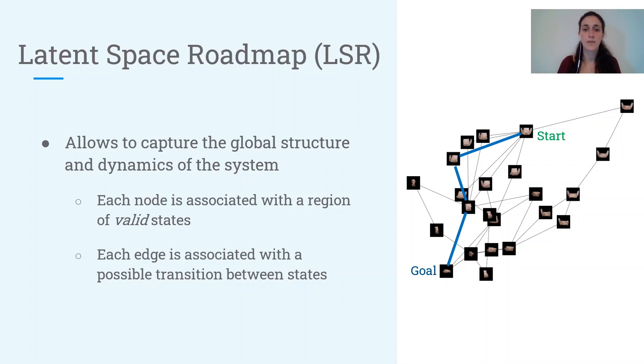So on the basis of this graph, we are able to plan in the latent space from the start to the goal, and then by decoding this latent plan we can obtain the visual plan.